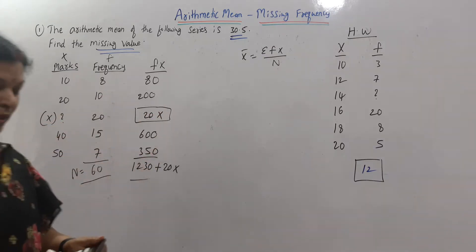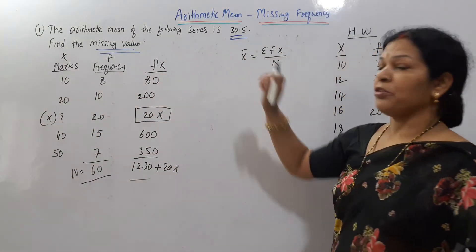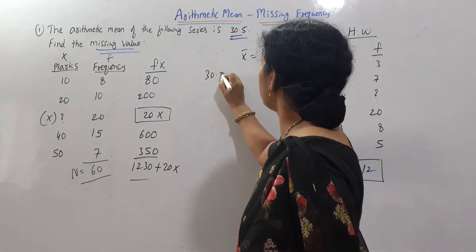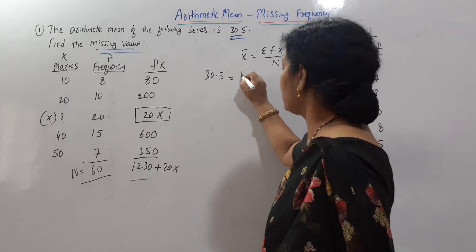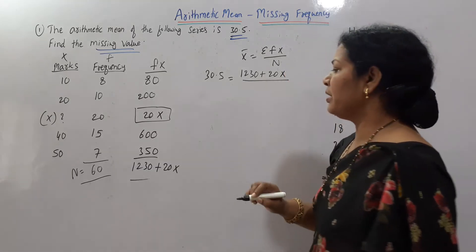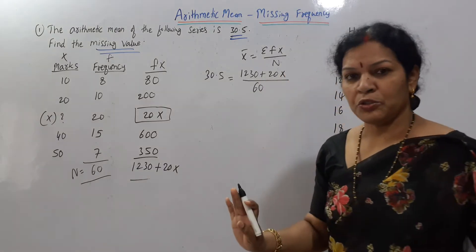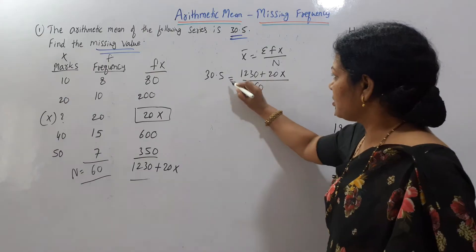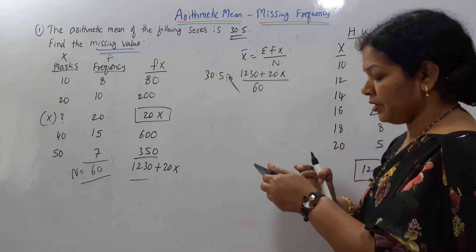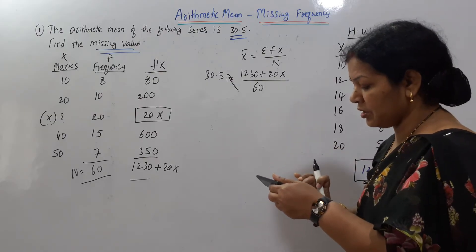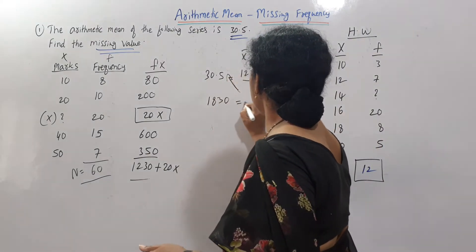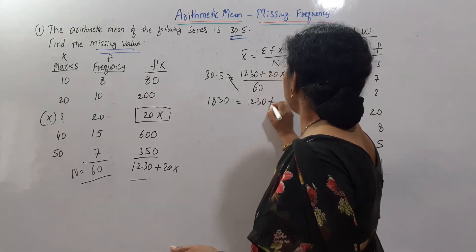Now we apply the formula. X̄ is already given as 30.5. So: 30.5 = ΣFX / N, which is (1230 + 20X) / 60. We go for cross multiplication: 30.5 × 60 = 1830. So 1830 = 1230 + 20X.